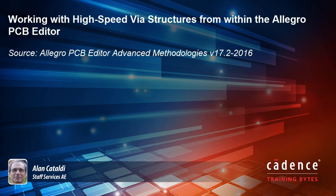This video will demonstrate working with high speed via structures from within the Allegro PCB editor. Demonstrated will be adding several via structures, replacing via structures, replacing a via with a via structure, redefining a via structure, refreshing a via structure, and disbanding a via structure. These commands can also be used with standard via structures.